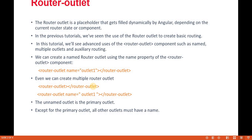What if we want more than one router outlet? If there are multiple router outlets, we call it auxiliary routing. The first one will be the default and is necessary — without it the app will not work. For any additional router outlet we have to give it a name. The unnamed outlet is the primary outlet, and all other outlets will have a name.